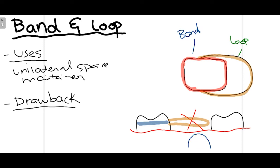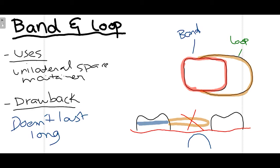Placing this band is much easier on a permanent molar compared to a primary molar, because of the morphology of the primary molar which converges occlusally, making retention of the band difficult. One drawback of the band and loop is that its survival is not very impressive — it hardly lasts 18 months maximum. It also doesn't substitute for the occlusal forces that normal teeth provide; its only function is to maintain space.